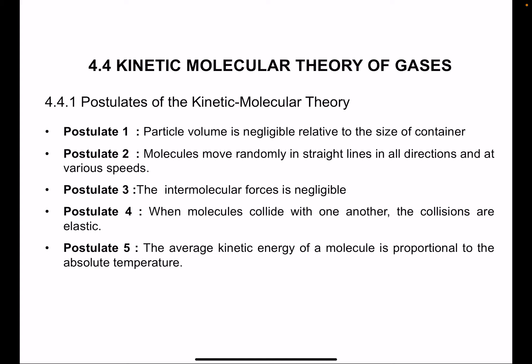Before we go into detail about this chapter, we are going to look at the kinetic molecular theory of gases, specifically focusing on a few postulates made for this theory. There are five postulates, and all of them are interrelated. The first postulate: the particle's volume is negligible relative to the size of the container. This is the first assumption — the volume of the particle is very relatively small and we can assume it is close to zero. The second postulate: molecules move randomly in a straight line in all directions and at various speeds.